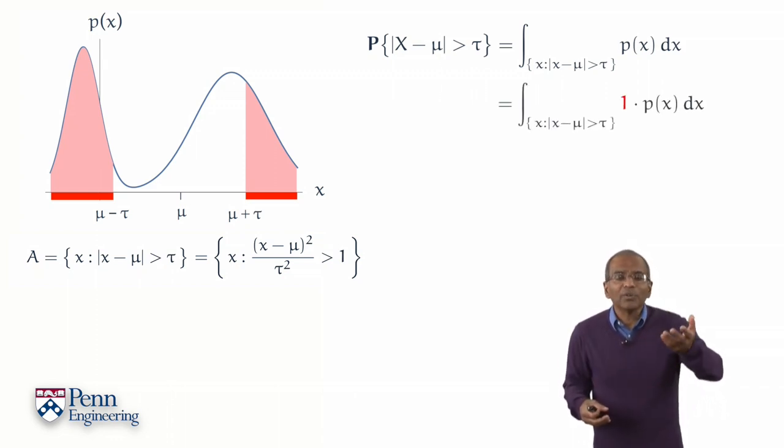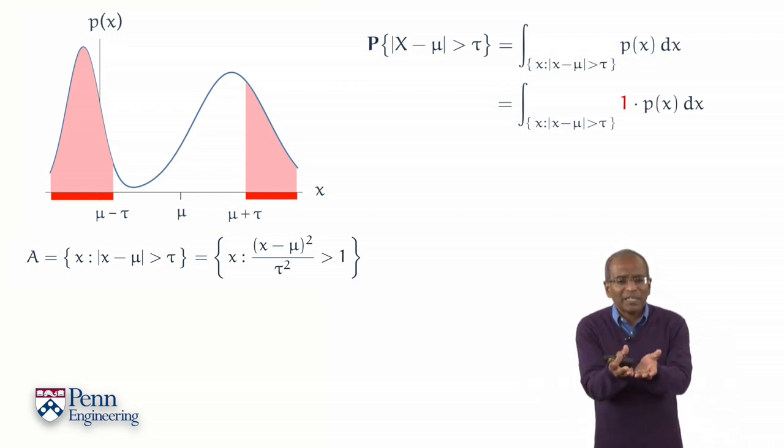And outside the region of interest, points x contribute a weight of 0, nothing. Well, of course, I've done no damage to the identity. It is multiplying p of x by 1 just gives me p of x. So what? But here's where the Chebyshev idea comes to the fore.